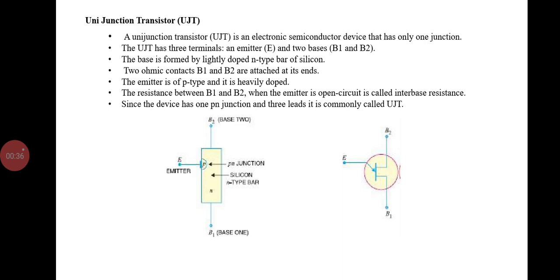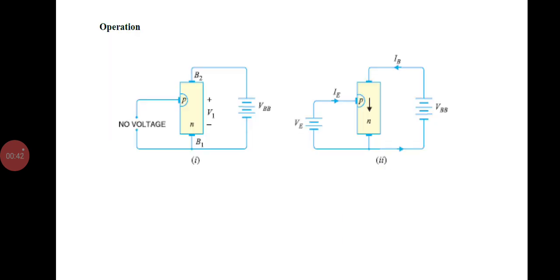Since the device has one P-N junction and three leads, it is commonly called UJT. This is the circuit diagram showing how it is connected for operation.